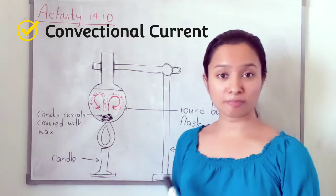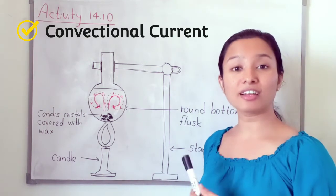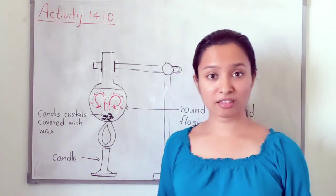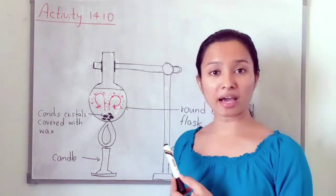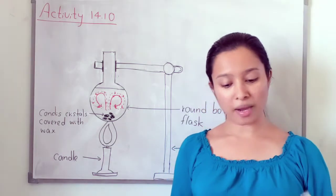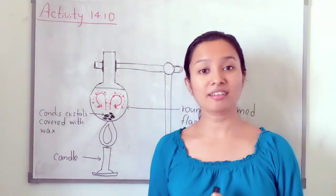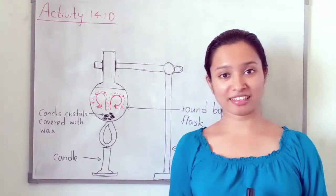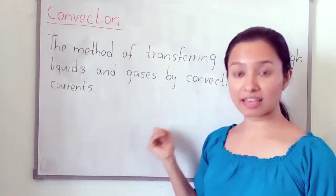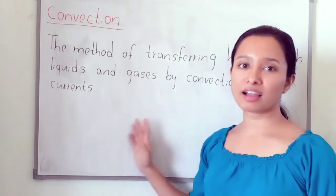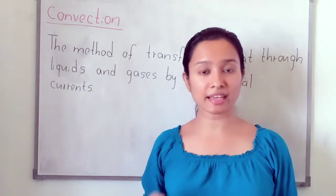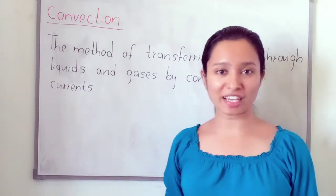The water in the flask is heated by these convectional currents. We can realize that water is heated up by convectional currents. The method of transferring heat through liquids by convectional currents is known as convection. So, convection is the method of heat transfer through liquids and gases by convectional currents.